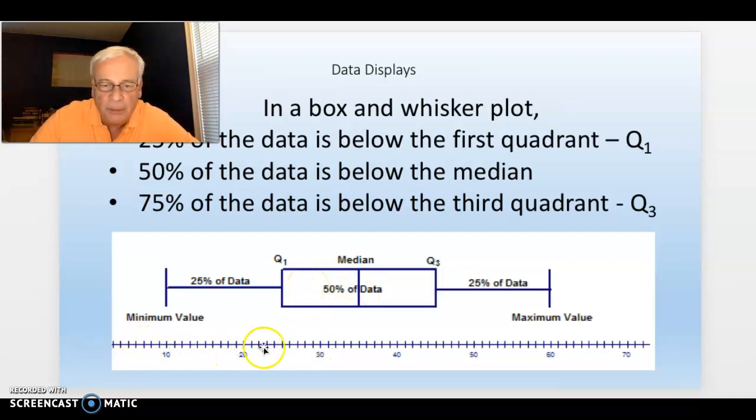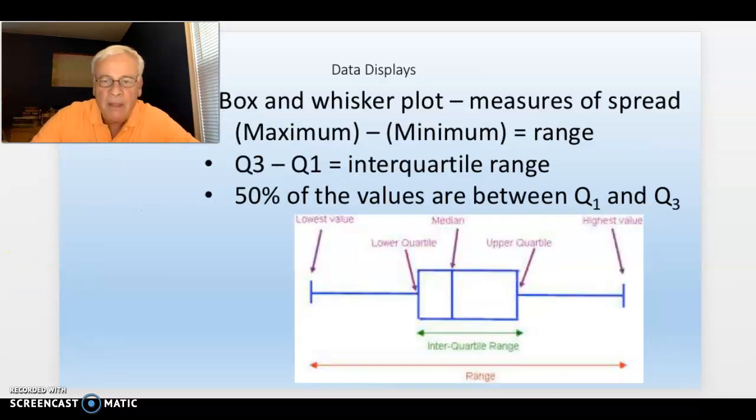And if you notice, in a box and whisker plot, there's a number line underneath here. The number line is evenly spaced, just like a regular number line. But the box and whisker plot might not be symmetric. Like this one right here—it's not symmetric.